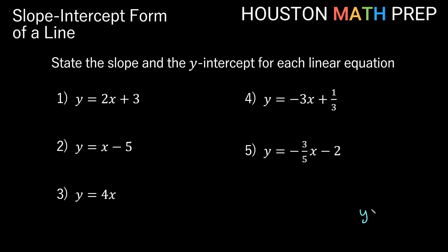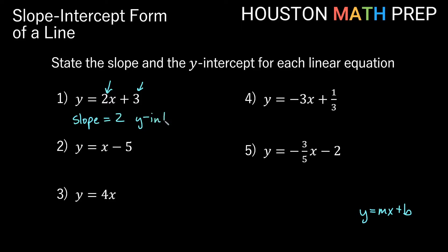Remember, our slope-intercept form is y equals mx plus b, where m is our slope and b is our y-intercept. So if our m is 2 and our b is 3, then the slope is 2 and the y-intercept...